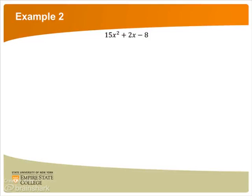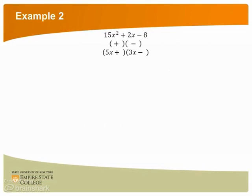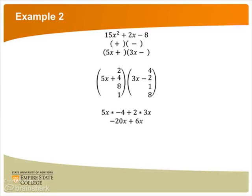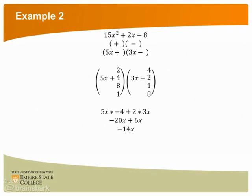What if we want to factor 15x squared plus 2x minus 8? We have a minus at the end, so we set up our parentheses with a plus and a minus. We need to factor the 15x squared, which would be 5x multiplied by 3x. Next, we have to factor the 8 — this is either 4 times 2 or 8 times 1. We make sure to write all possible pairings of factors, then try to match the positive 2x. We multiply 5x by negative 4 plus 3x times 2, giving us negative 20x plus 6x, which is negative 14x. This is not correct at all, so we can eliminate this option.